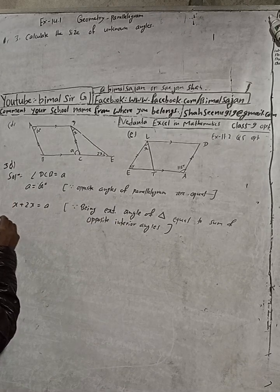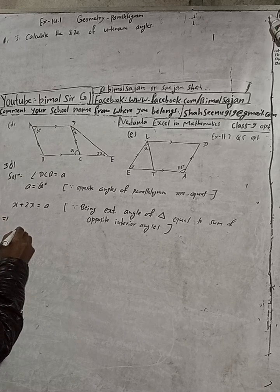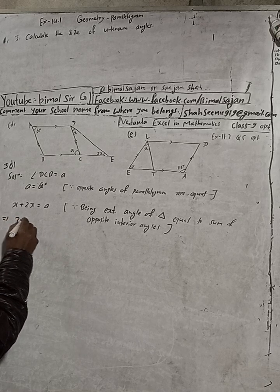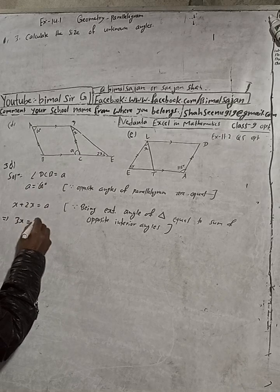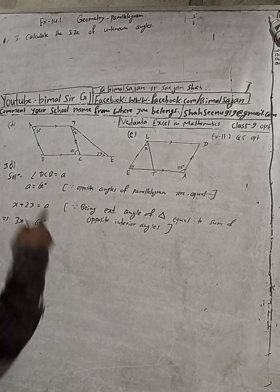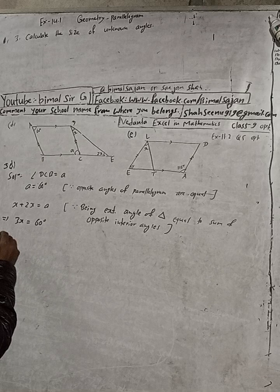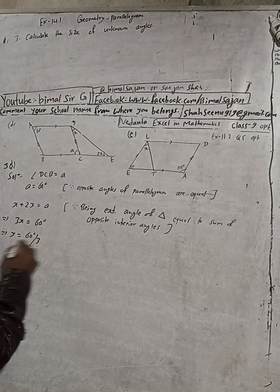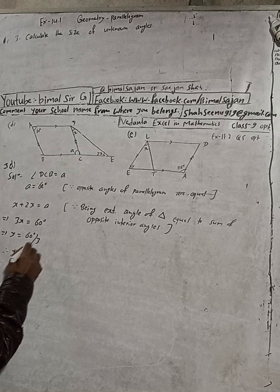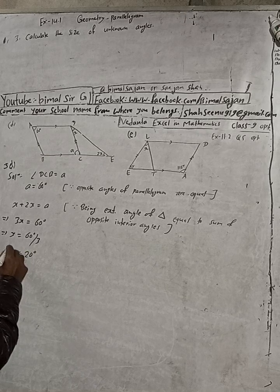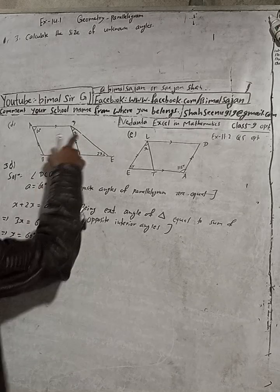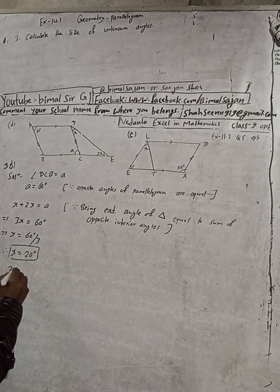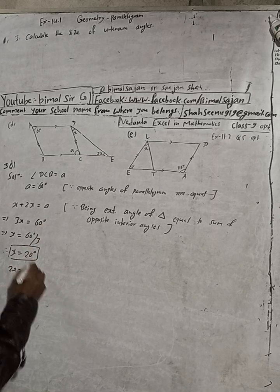Now solve this part. Now here, this x plus 2x is how much? 3x is equal to, and a is how much? 60 degrees from here. Now x is equal to this 60 degrees divided by this 3. Therefore x is equal to how much? 20 degrees.